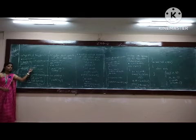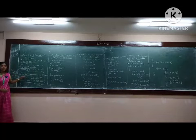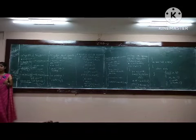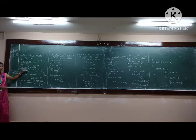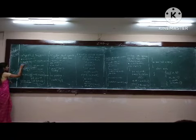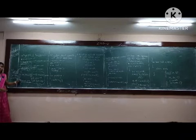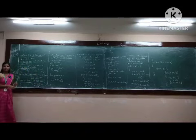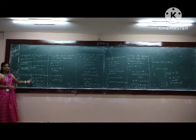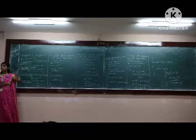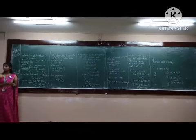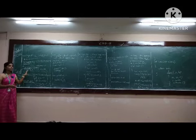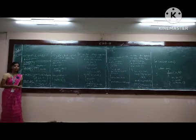So first the declaration. Declaration is nothing but passing the arguments with a function name. Then function call will be calling the function name by some values. And function definition contains the logic. When the function is called, it will come for the definition. In the return, I am going to give the result back to the function call. Is that okay?